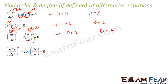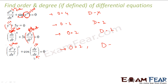Next example has a second order derivative and a first order derivative. So my highest order is 2, and order is 2. For degree, check whether it has trigonometric, exponential, or log functions — yes. The cos function is of dy/dx — cos(dy/dx). So degree is not defined.